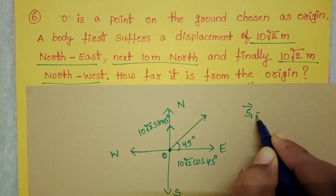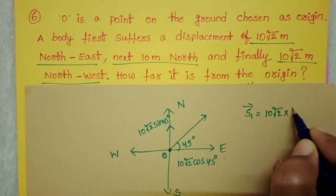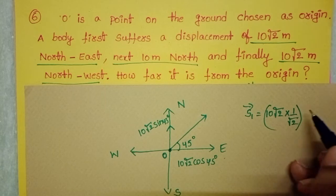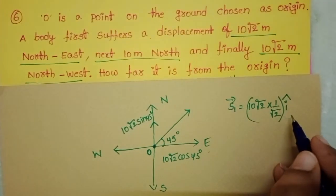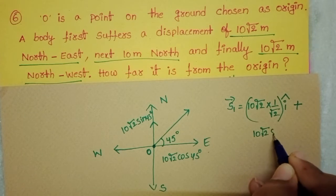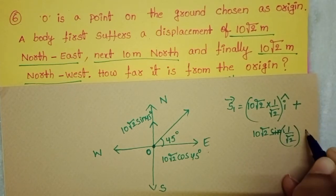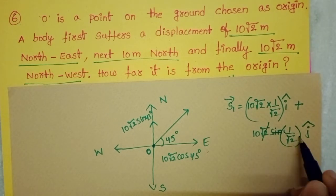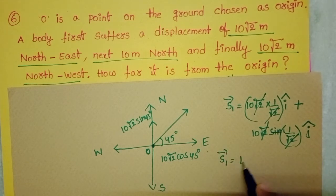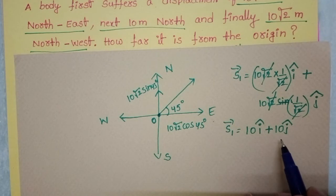S1 = 10√2 cos45° along the east direction, which is the positive x-axis with unit vector i cap. The value of cos45° is 1/√2. Plus 10√2 sin45° with unit vector j cap along the north direction. Sin45° = 1/√2. The √2 terms cancel in both components, so S1 = 10i cap + 10j cap. This is the initial displacement vector of the particle.